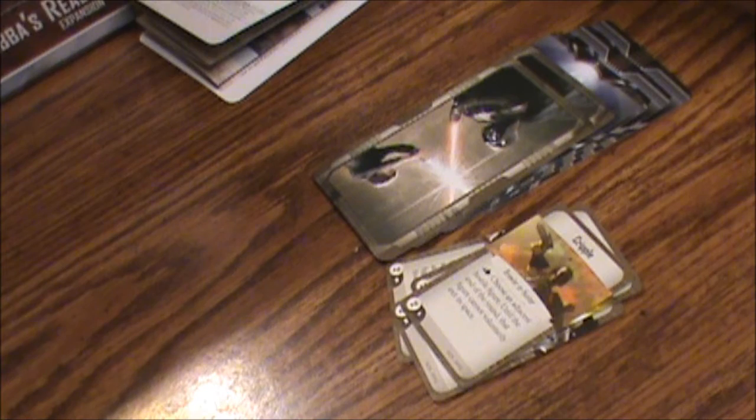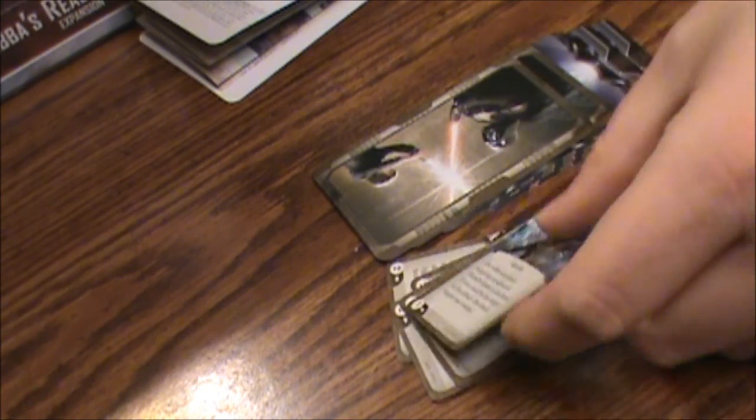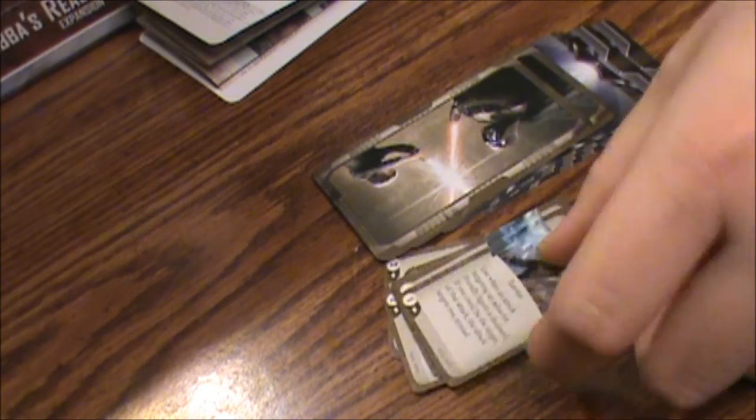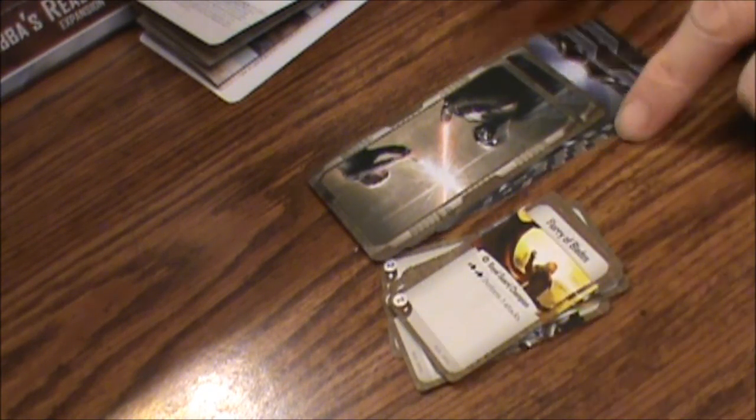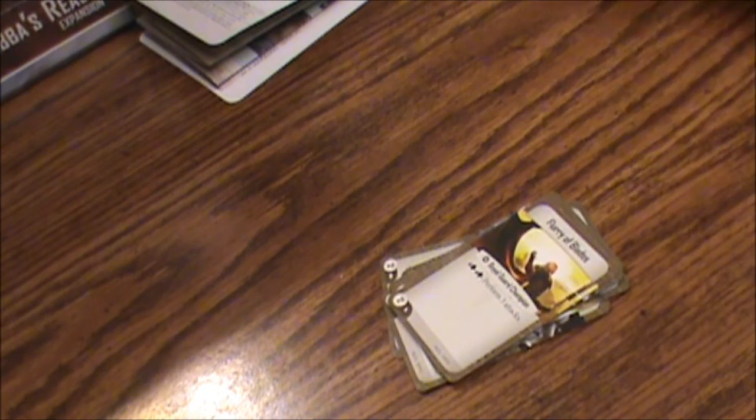Bodyguard guardian. Use when an attack targeting an adjacent friendly figure is declared. If you could be the target of that attack, the attack targets you instead. There's another bodyguard. Fury of blades, royal guard champion. Exhaust twice, perform three attacks. That's pretty good.